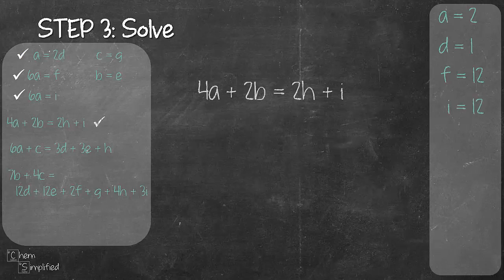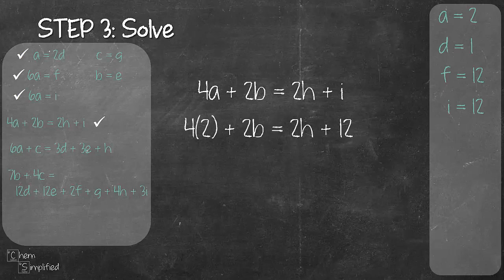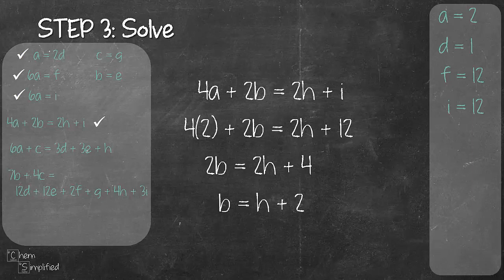Next we'll work with 4a plus 2b equals 2h plus i. Plug in the value for a and i will give us 2b equals 2h plus 4. Simplify that gives us b equals h plus 2. Since b is still not solved I'm gonna add that to our list of equations on the left hand side.